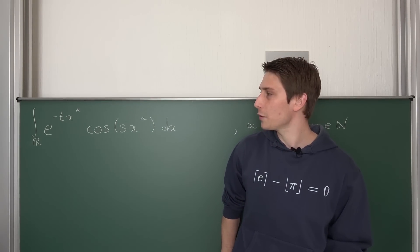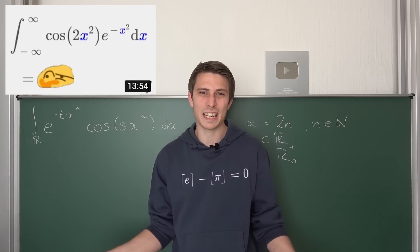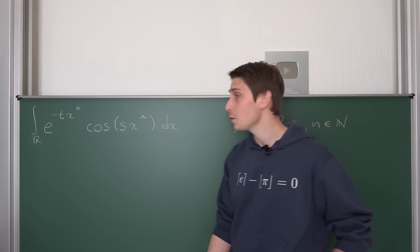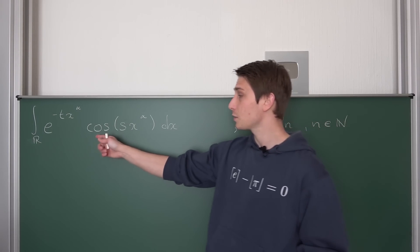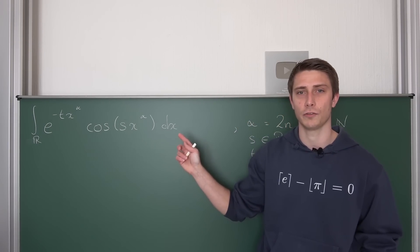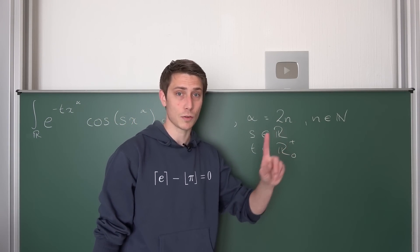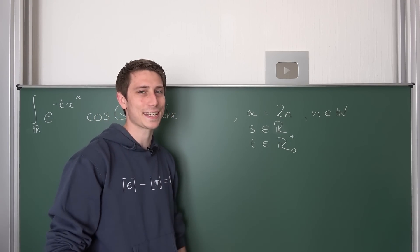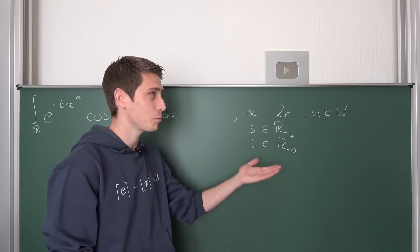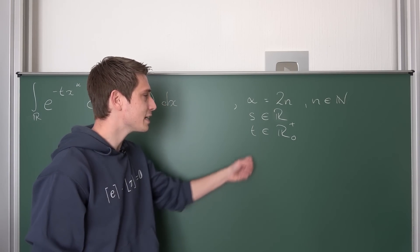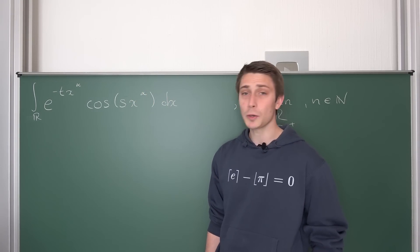We are going to deal with this generalization today. You might recognize this integral as one we have done before — it was one of infinitely many special cases. This time we are going to take a look at the integral from negative infinity to infinity of e to the negative t times x to the alpha, times cosine of s times x to the alpha, where alpha is of the form 2 times n — a positive even integer without zero at the moment. This is going to be a really special case and I have to make this a two-part thing. S is going to be out of the real numbers — it can be anything, possibly also complex. And t is an element of the positive reals including zero, so t can be equal to zero — we can take the limit.